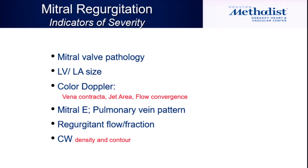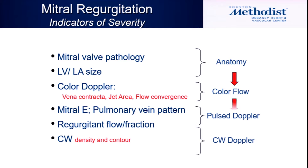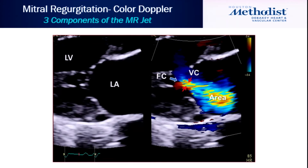You have to have a methodical approach to evaluate these lesions. The methodical approach has to include: anatomy, color flow — which is your first screener — pulse Doppler, and CW. I wouldn't ask our surgeons to look at pulse Doppler and CW as much, but beware of color Doppler, which can be misleading — very helpful, but misleading.